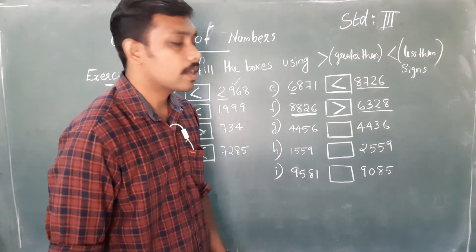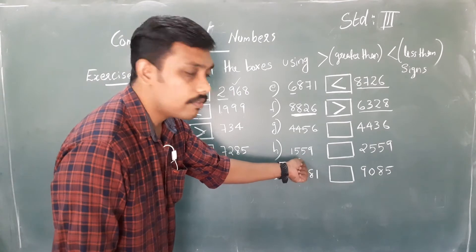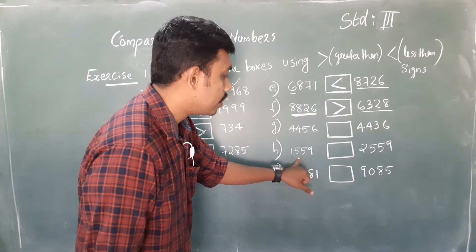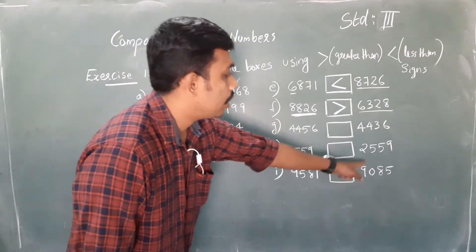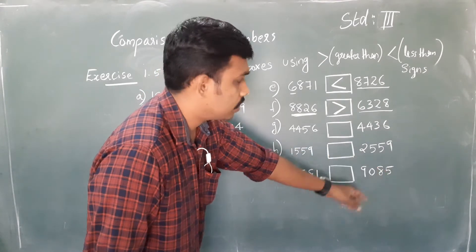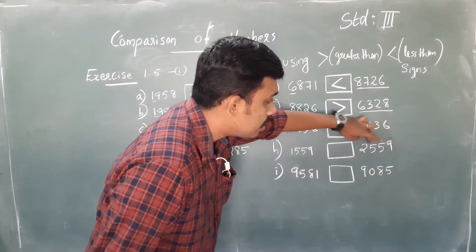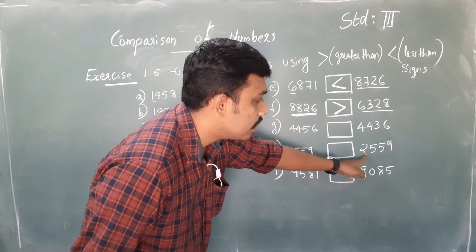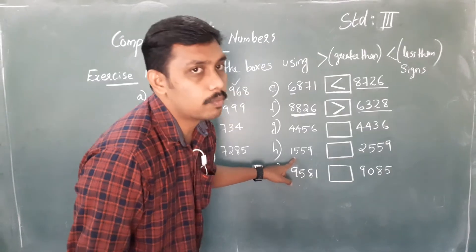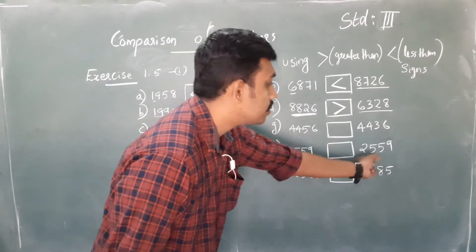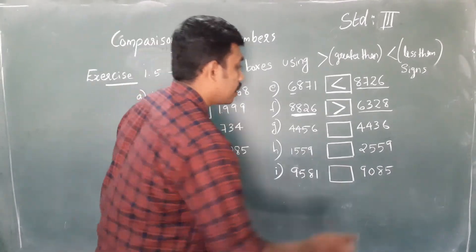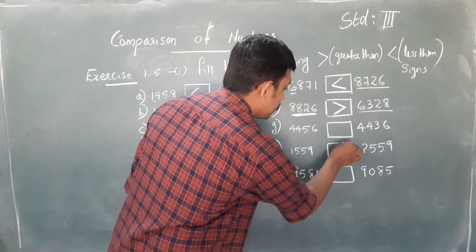Next problem: 1559 and 2000-something. In these four-digit numbers, check the left extreme number — here it is 2 and here it is 1. So the second number is the largest. We represent it like this.